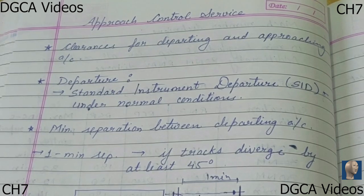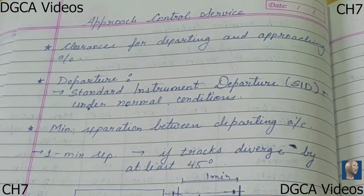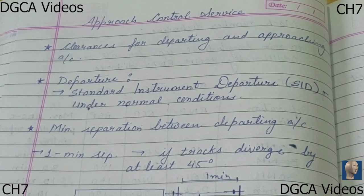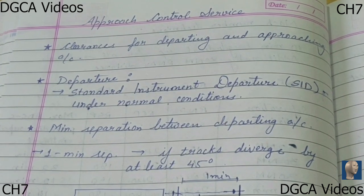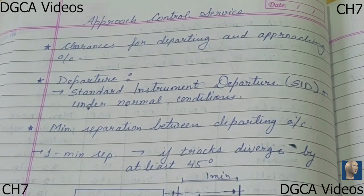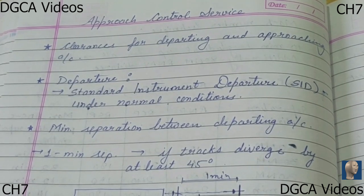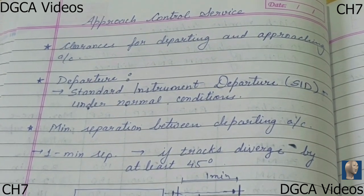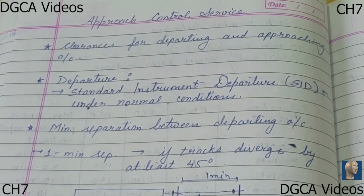Approach control service is provided by the approach control unit. These services include clearances for departing and approaching aircraft — what heading to follow, which runway to land or take off from, meteorological conditions in the vicinity of the aerodrome, and what factors would affect takeoff and landing. First, we'll be talking about departure. There is something known as the Standard Instrument Departure, short form SID, which has been established at aerodromes, and normal departure of the aircraft is done with respect to the SIDs.